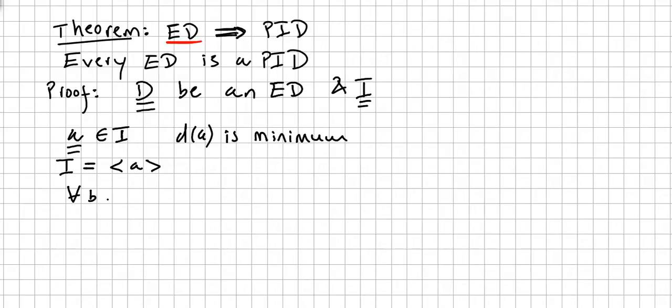Because for all b in the ideal, element b in the ideal, there will be q and r such that b will be equal to this a, right? aq plus r. And here, either r equals zero or the degree of r will be less than the degree of a.